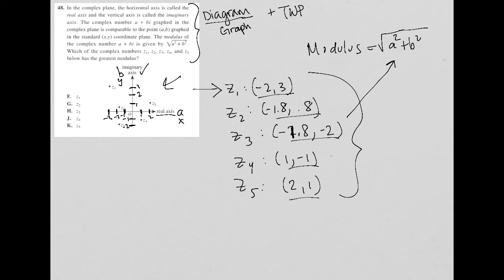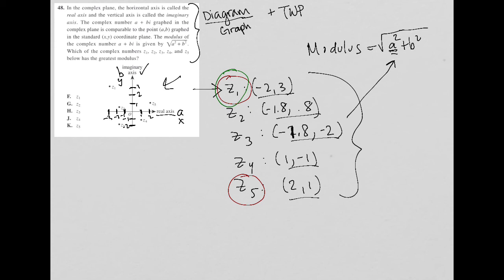I'm going to use a little bit of logic here. For my A value, since I'm squaring it, it doesn't matter if it's positive or negative. So it looks like Z5 and Z1 have the largest absolute value A component, being 2. So that will give me the largest A squared. And for B squared, it looks like Z1 definitely gives me the largest B value — there's nothing else even close to that. So Z1 has to be the right answer.